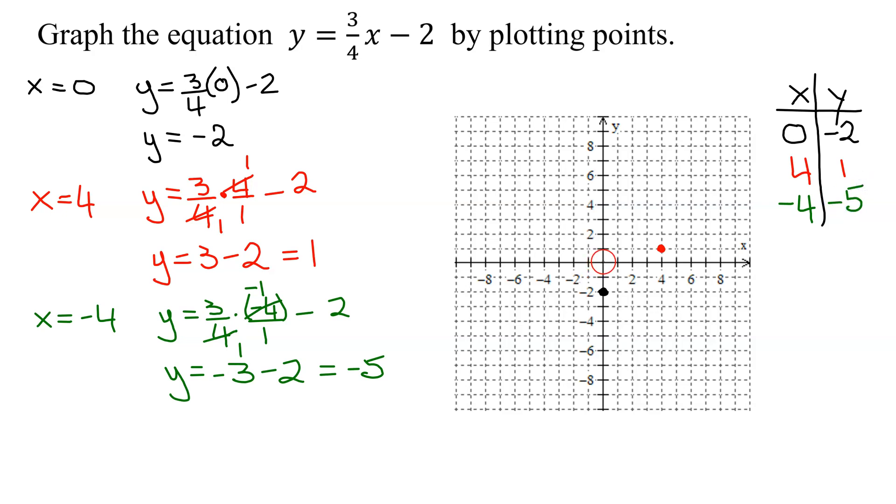So that point, start at the origin again, 4 to the left to get me to negative 4, and then 5 down to there. And those look pretty good. It looks like it's going to give me a pretty nice straight line.